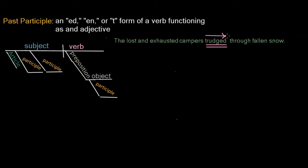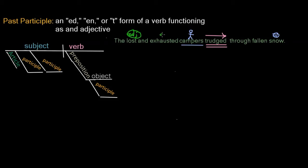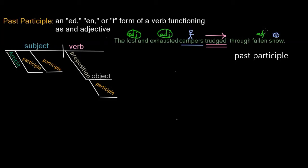Our subject is 'campers,' and we have one more noun: 'snow.' Then we have these other three words that look like verbs, but they are our past participles. 'Lost' — a -t form of a past participle. 'Exhausted' — an -ed form of a past participle, functioning as an adjective. And 'fallen' — an -en form of a past participle. In this sentence we have a preposition 'through' and a conjunction 'and.'